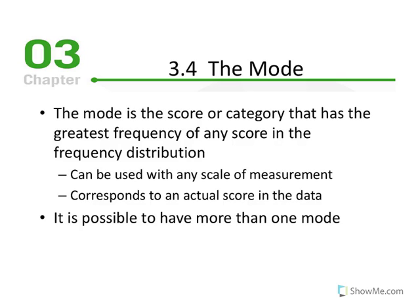But the mode will always be an x value from our distribution. The mode is the measure of central tendency that will always be reflected in the original data set we're working with. It is possible to have more than one mode, which makes the mode the least effective in terms of reporting measure of central tendency.